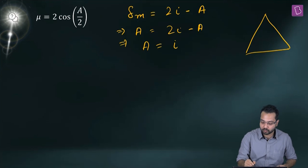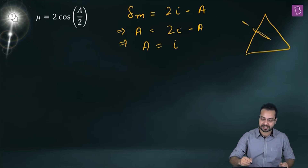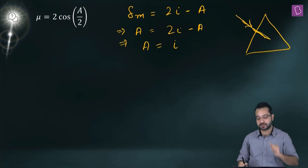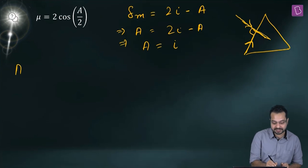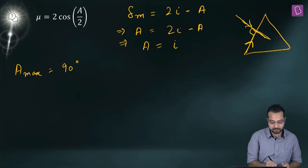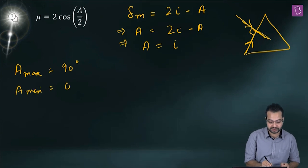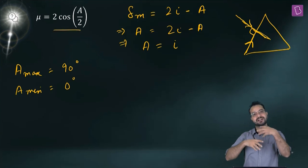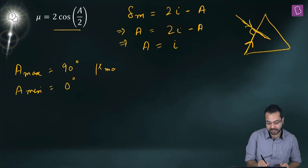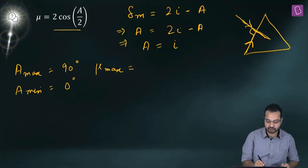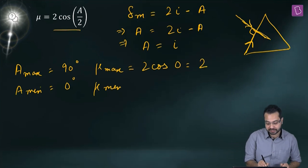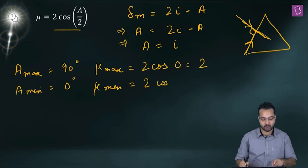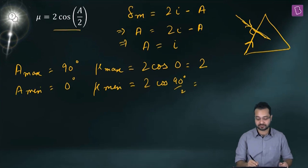For a prism, the angle of incidence ranges from 0° (minimum) to 90° (maximum, grazing incidence). Since A = i, the maximum value of A is 90° and the minimum is 0°. Since cos is a decreasing function in the first quadrant, μ_max = 2 cos(0°/2) = 2 × 1 = 2 and μ_min = 2 cos(90°/2) = 2 cos(45°) = √2.